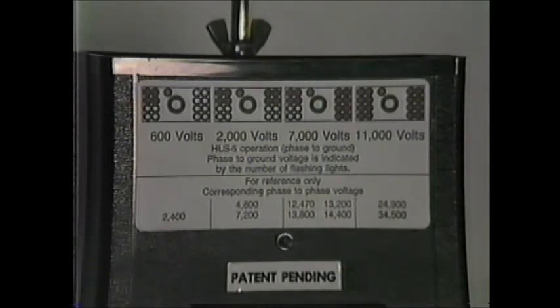Due to the proximity of grounds on underground equipment, the HLS 5 will usually have one more bank of lights lit than would be expected when used in an overhead system. Because induced voltages are not as prevalent on underground systems, customers have not found this to be an operational problem.